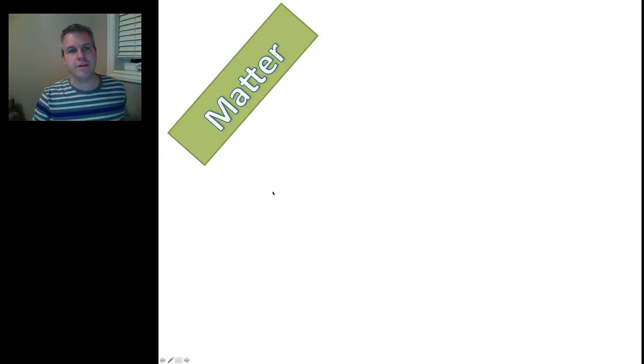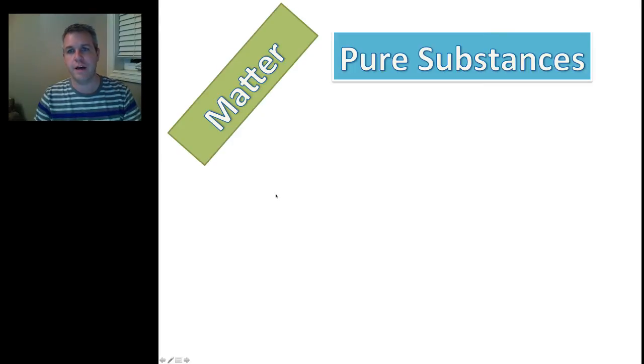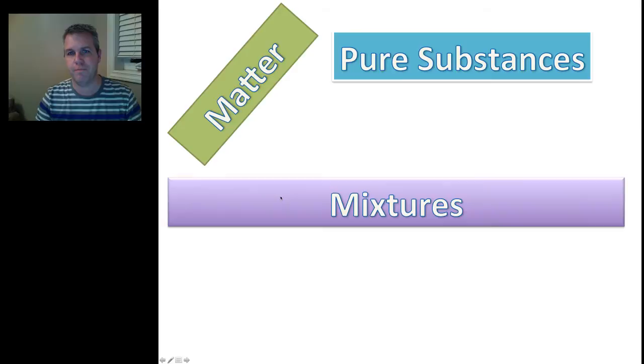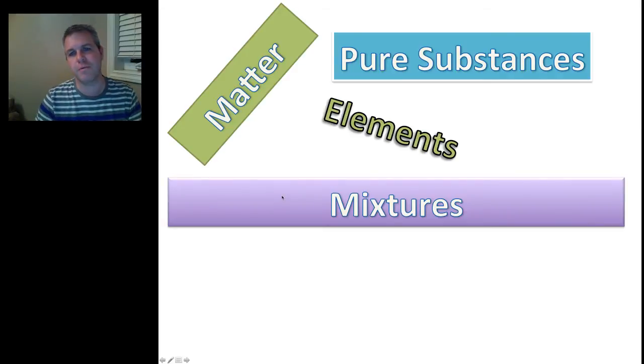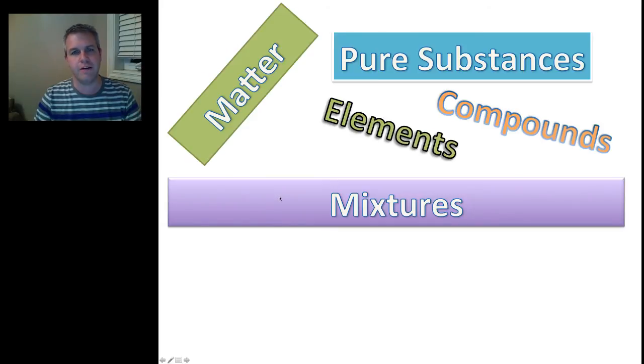So, how do we classify matter? Well, matter is broken up into two components. It's broken up into pure substances and mixtures. Now, when we look at pure substances, the pure substances are broken up into two separate categories, elements and compounds. Mixtures, then, are broken up into four areas.